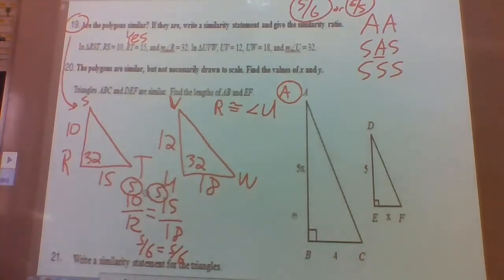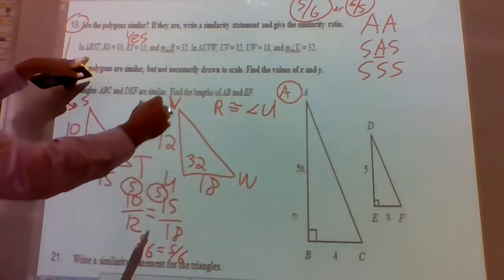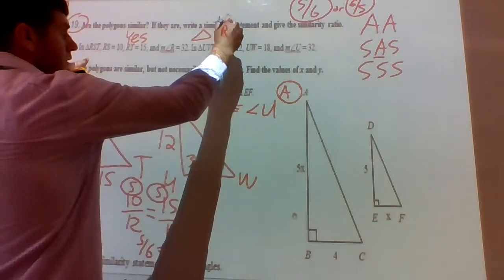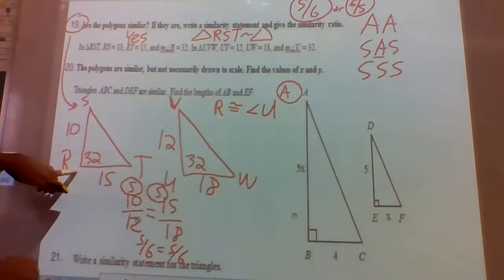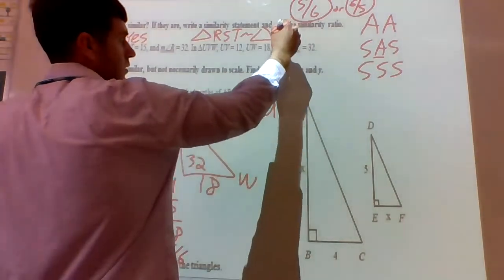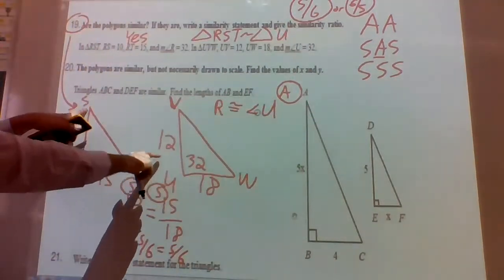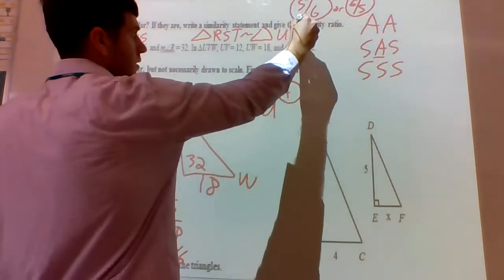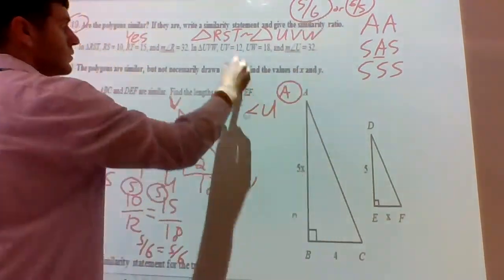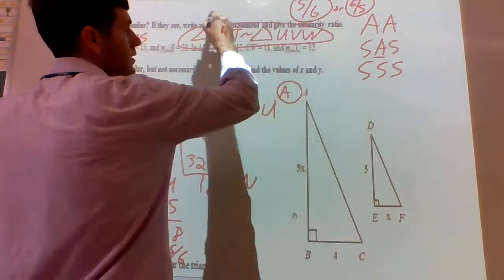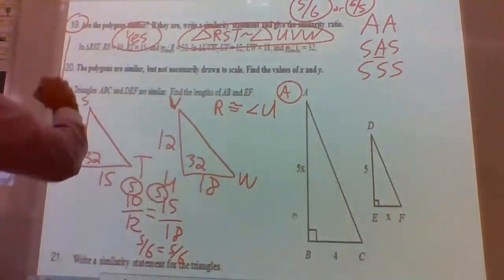For the similarity statement, let's go with triangle RST similar to triangle UVW, matching corresponding vertices. R corresponds with U, S corresponds with V, and T corresponds with W. So the similarity statement is triangle RST similar to triangle UVW, with similarity ratio 5/6 or 6/5, and yes they are similar.